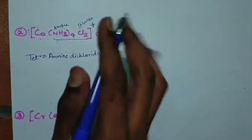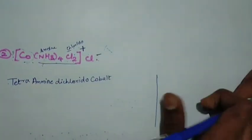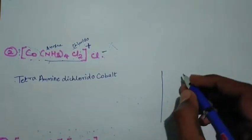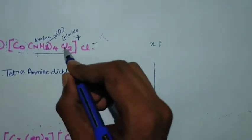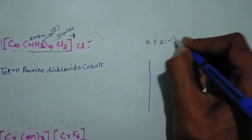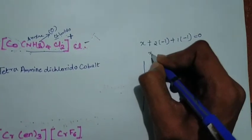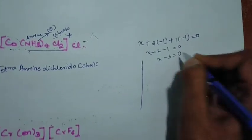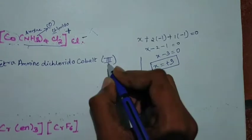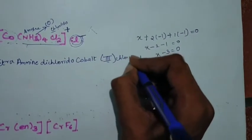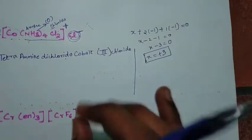Now we add the central metal atom. Since this is a plus complex, cobalt stays as 'cobalt'. Let's find the oxidation state: let cobalt = x. Amine is neutral (0). Chlorine is 2 × (−1) = −2. So: x − 2 − 1 = 0, then x − 3 = 0, so x = +3. Cobalt is +3.